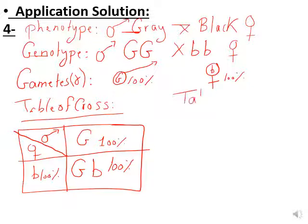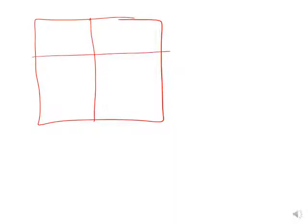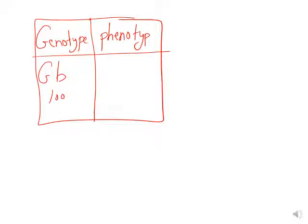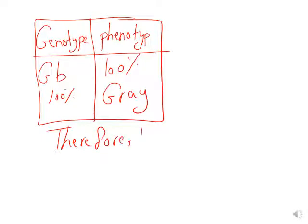Moving to the table of results — the final step of factorial analysis. In the genotype column we have Gb at 100%. Since G is dominant, the gray allele is expressed in both homozygous and heterozygous conditions, so the phenotype is 100% gray. Therefore, the results are verified.